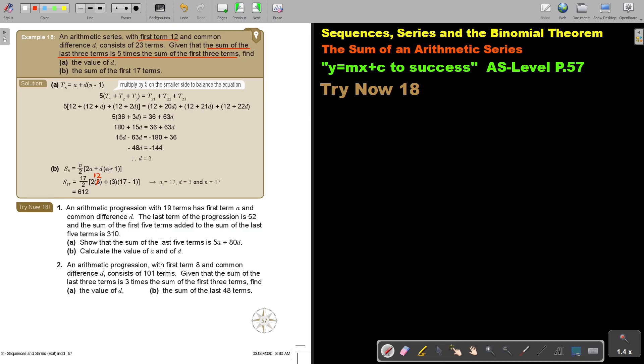So I substitute D and the 17 terms, I substitute the 17 and my final answer, if I work this out, will be 612. And that will be the sum of the first 17 terms. I want you to stop the video and I want you to do number 1. You can continue the video as soon as you are finished.